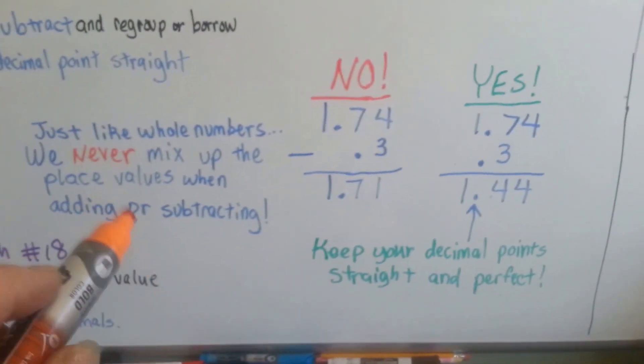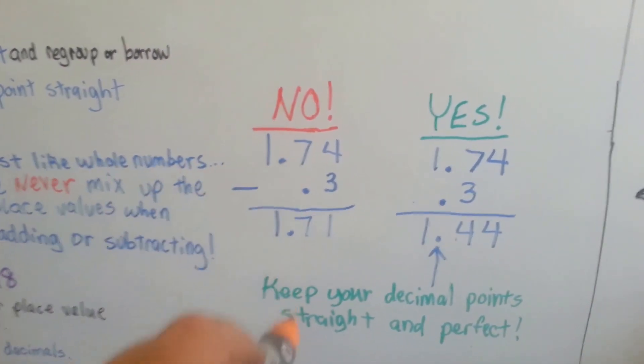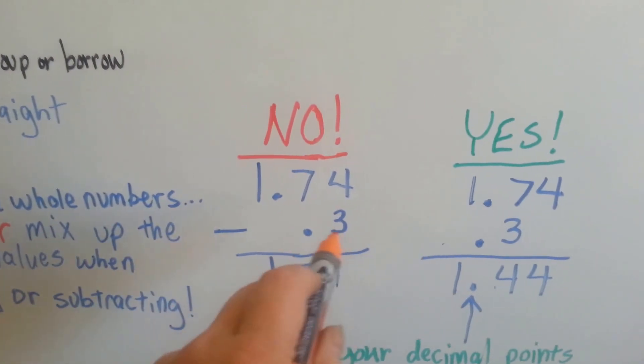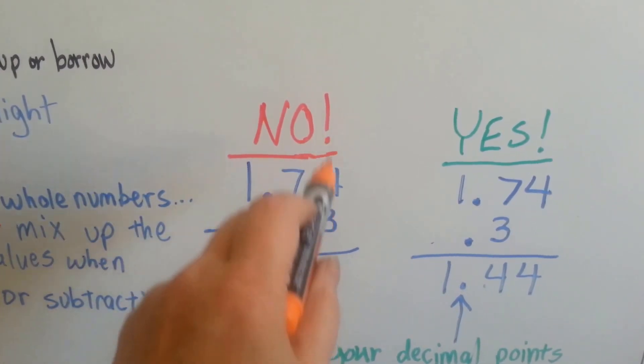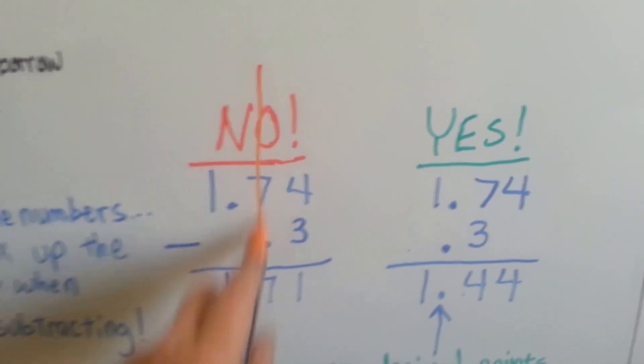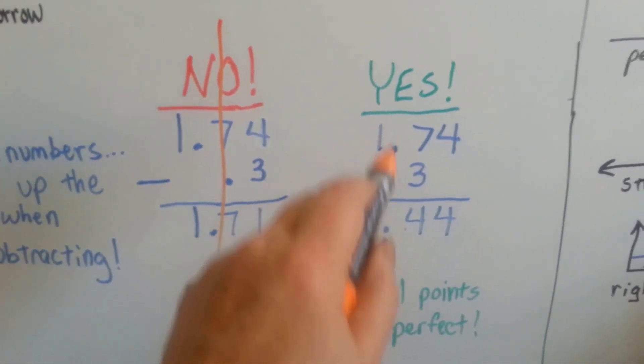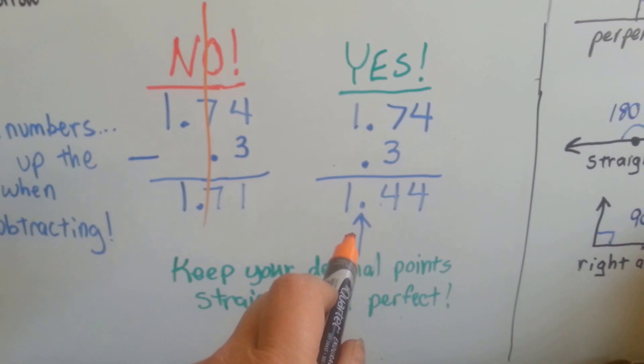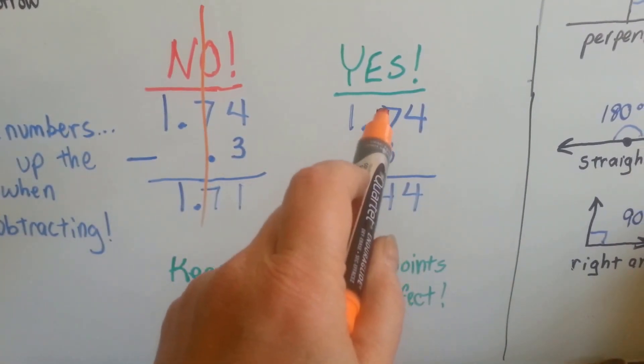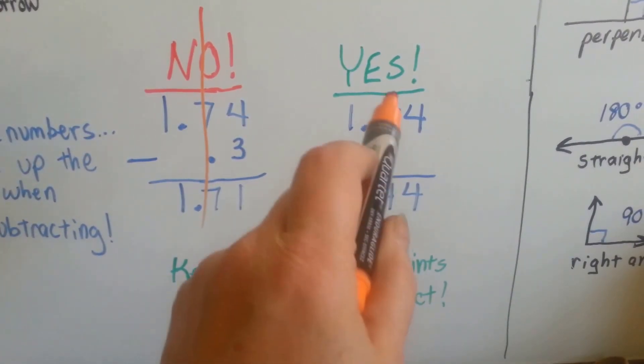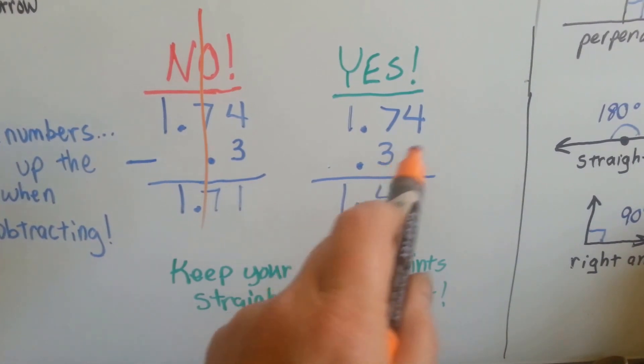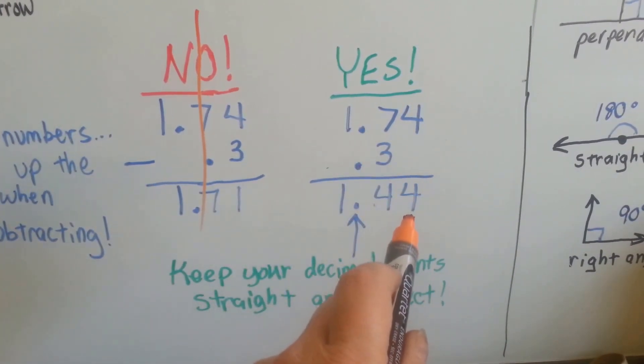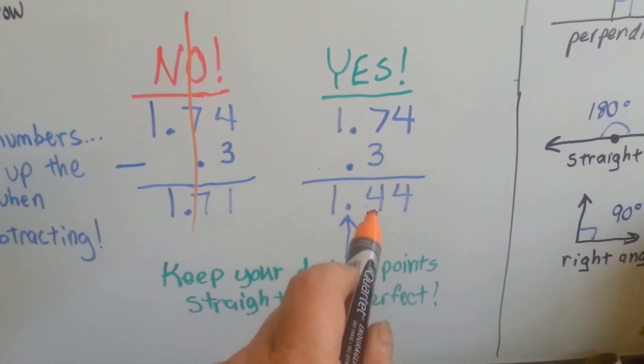And the way to keep them straight is by keeping our decimal points straight. Look, you can't add three tenths to four hundredths. That is really wrong. You keep your decimal points really straight, pretty and perfect, going straight up and down. And then you can see that the seven tenths and the three tenths are stacked on top of each other. There's no hundredths, so the four is just going to come down.